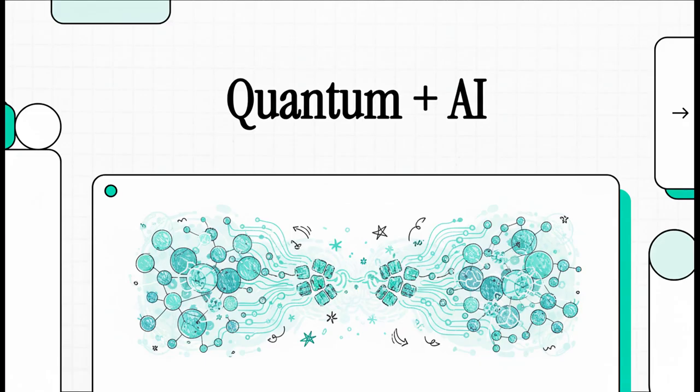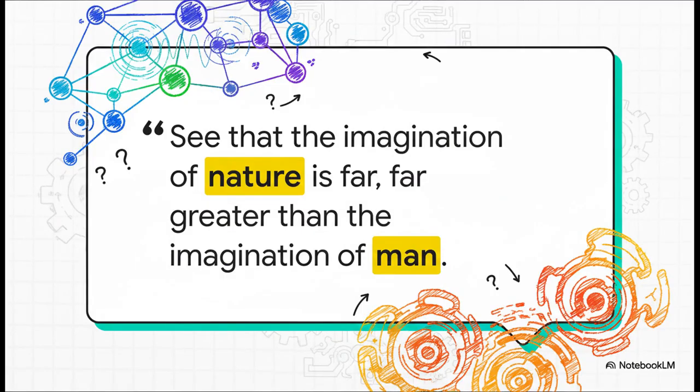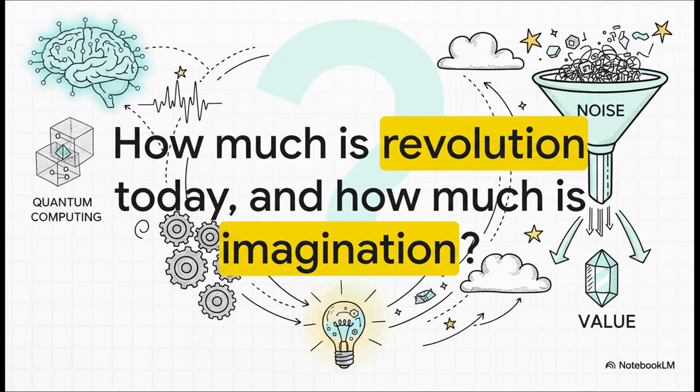Let's dive in and really separate the science from the sci-fi. See that the imagination of nature is far, far greater than the imagination of man. I mean, what a line, right? That's from the legendary physicist Richard Feynman. And he was talking about the quantum world, this absolutely mind-bending place where the rules of our everyday reality just don't apply. We're talking about things like superposition and entanglement. It's truly wild stuff. And that quote really brings us to the big question, doesn't it? How much of this is a revolution we can actually use today versus how much is still just imagination?